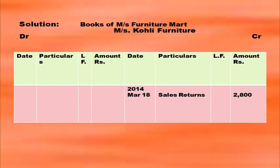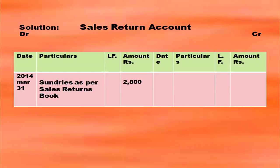See how posting is done for Kohli Furniture, who returned goods to Messrs Furniture Mart. Open the account of Messrs Kohli Furniture with date, particulars, ledger folio, and amount columns. On the credit side in the particulars column, write 'By Sales Returns Account' with date and amount. Then open the sales returns account — on the debit side write 'To Sundries as per Sales Returns Book' with date and amount.